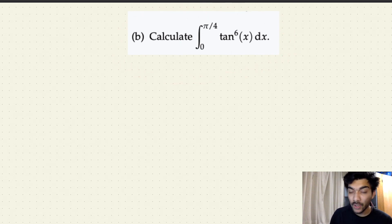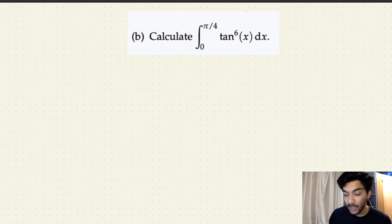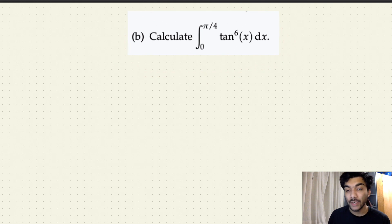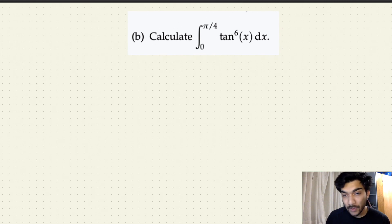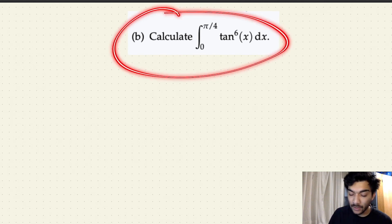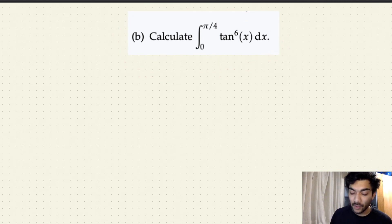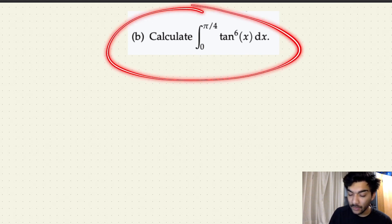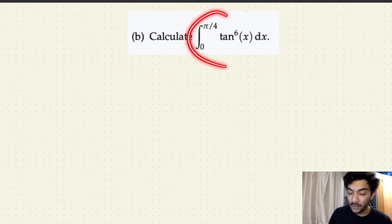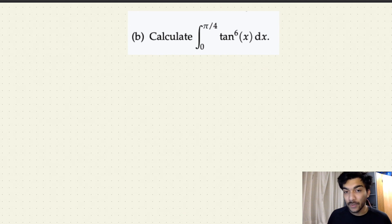Let's continue our previous video and do one question on calculating the definite integral of the form tan to the power nx. In order to calculate that, we'll again use the reduction formula that we proved in the last video. So if you have not watched my previous video, I would highly suggest you to first watch it in order to get the full idea about the formula we will be using, which is of the form tan to the power nx dx.